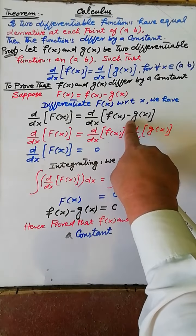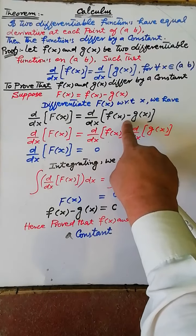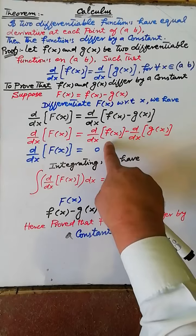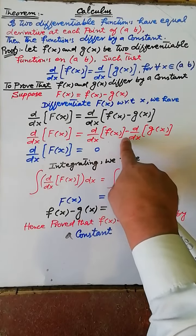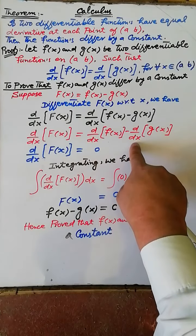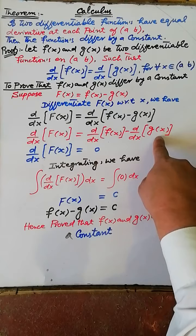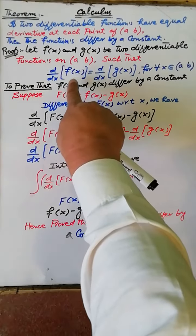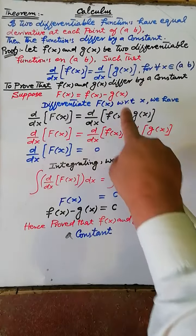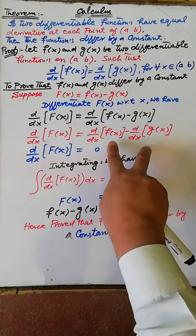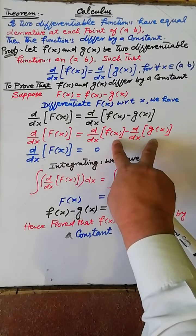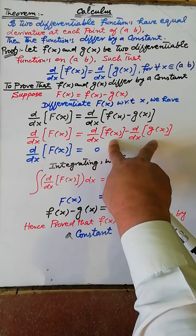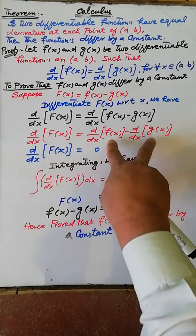According to the rule for the derivative of a difference of two functions, we apply the derivative operator to f(x) and subtract the derivative of g(x). According to the hypothesis, the derivative of f(x) equals the derivative of g(x), therefore the derivative of f(x) minus the derivative of g(x) equals zero.